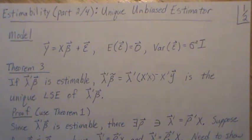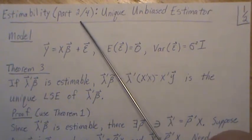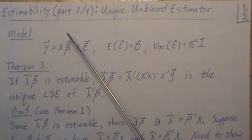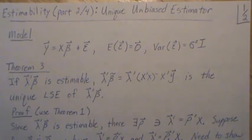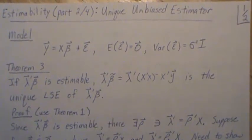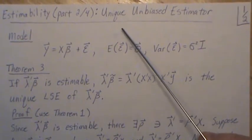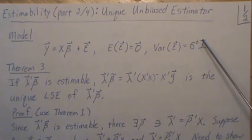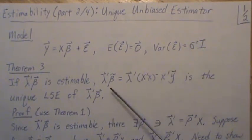Hello, this is the next video in a playlist I'm calling General Linear Models, Design of Experiments. This is the second part in the mini-series within that playlist called Estimability, and here we're going to look at the unique unbiased estimator for an estimable function.